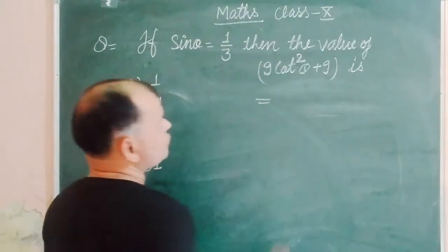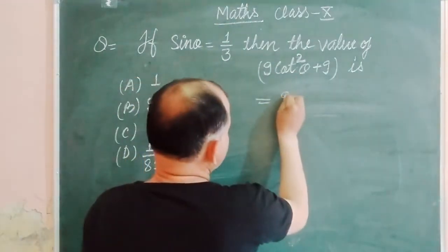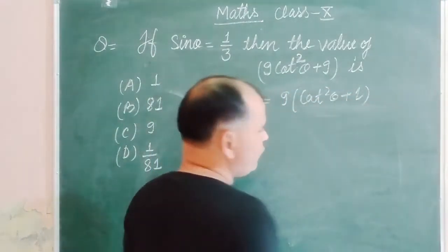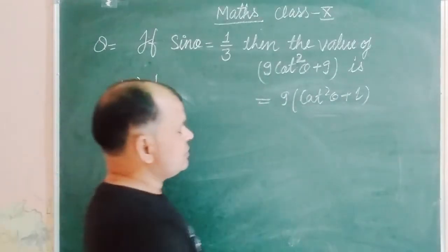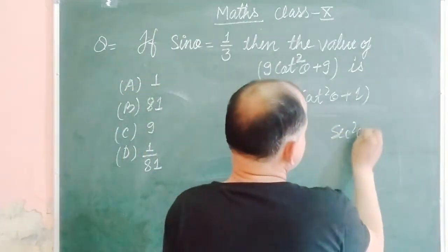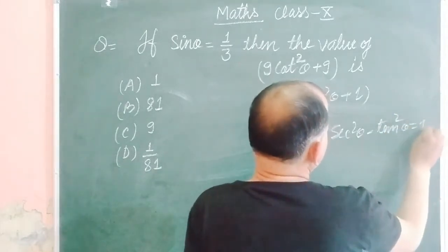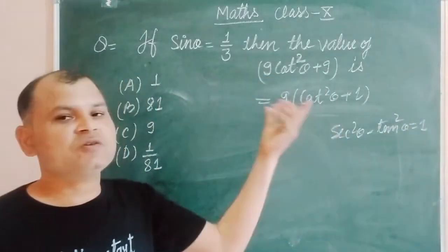We have 9cot²θ + 9. So we take 9 as common: 9(cot²θ + 1). You know the formula sec²θ - tan²θ = 1, but we cannot use this because here we have cot²θ.